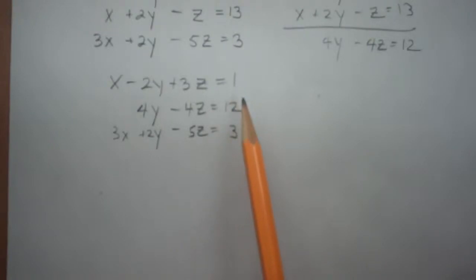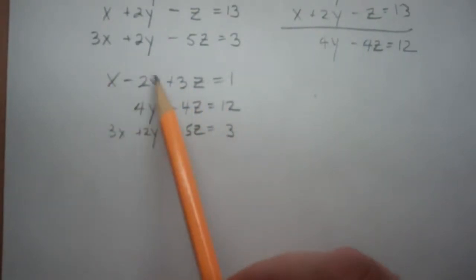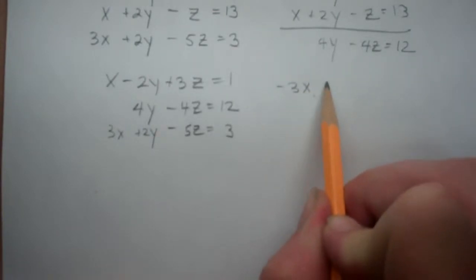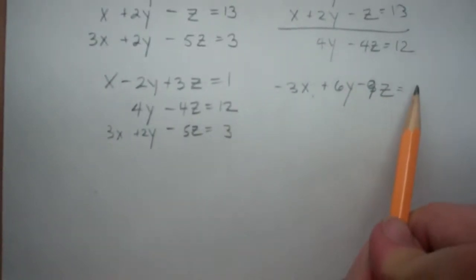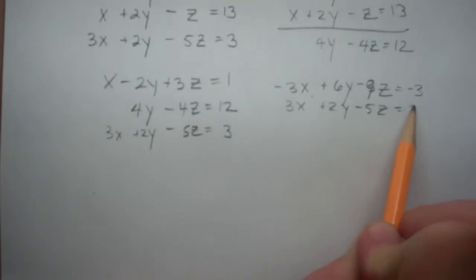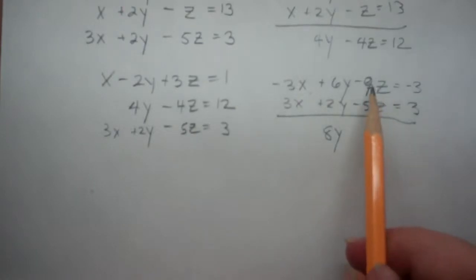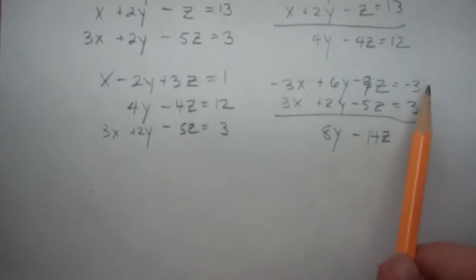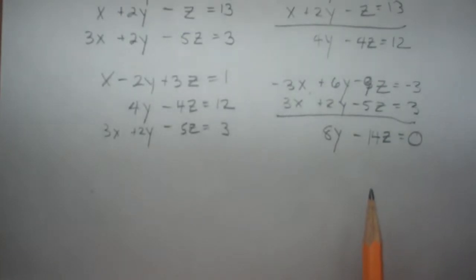What can we multiply the entire top equation by so that when we add it to the bottom equation, this 3x goes away? We multiply the top equation by negative 3 and then add to the bottom one. That gives us negative 3x plus 6y minus 9z is equal to negative 3, which we add to 3x plus 2y minus 5z is equal to 3. The x's go away. 6y plus 2y is 8y. Negative 9z plus negative 5z is negative 14z, and negative 3 plus 3 is 0. So we end up with 8y minus 14z is equal to 0.